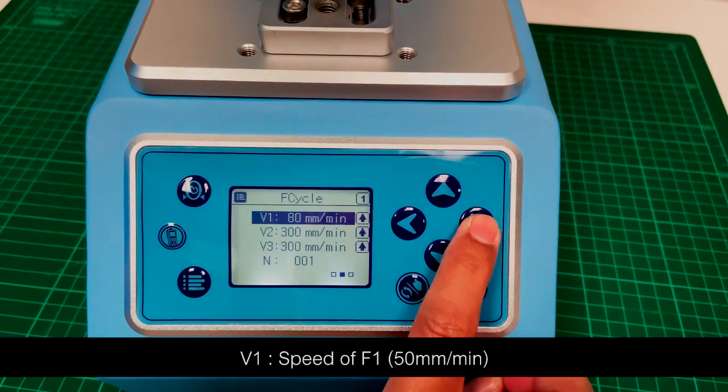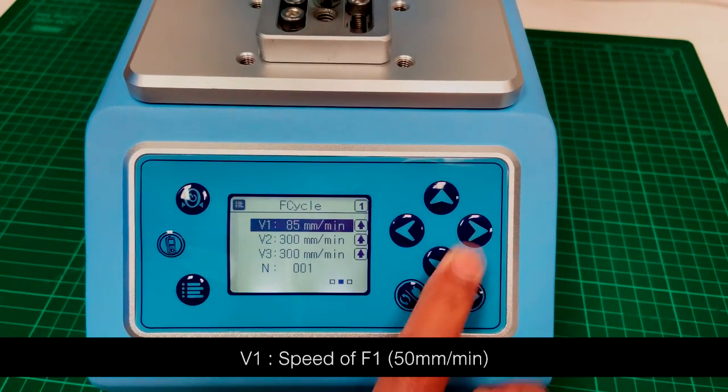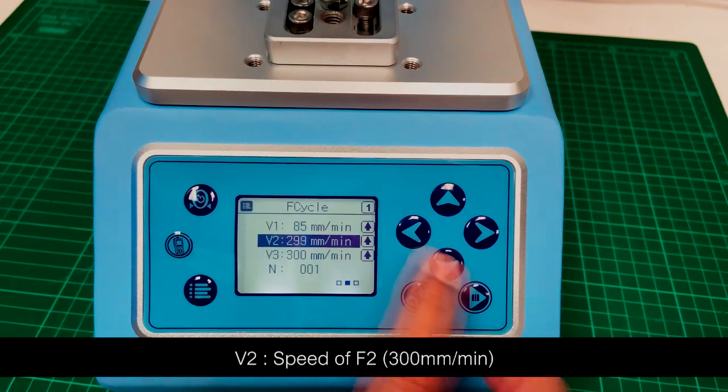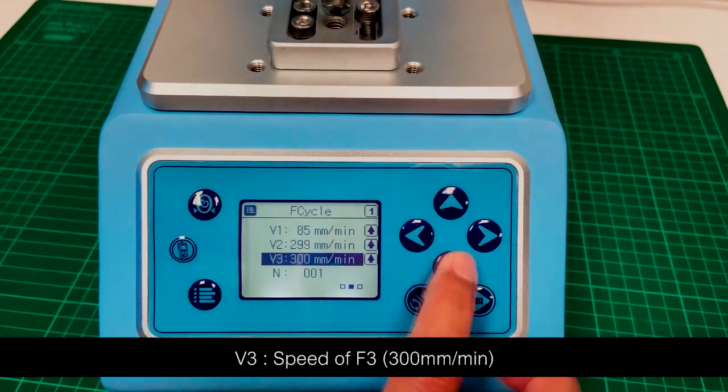V1: speed of F1, 50 mm per minute. V2: speed of F2, 300 mm per minute.